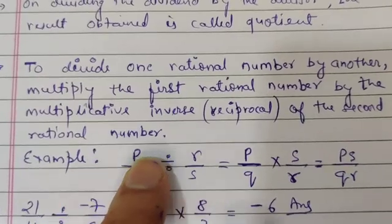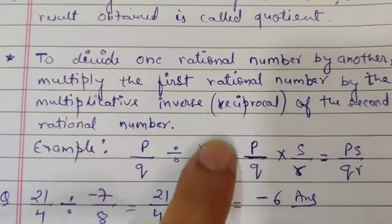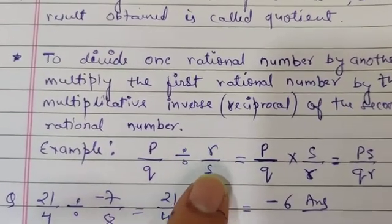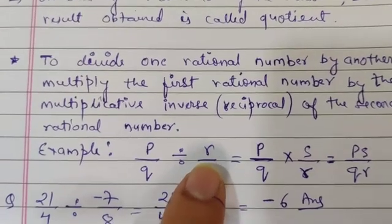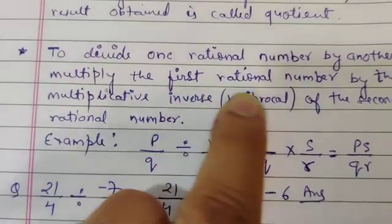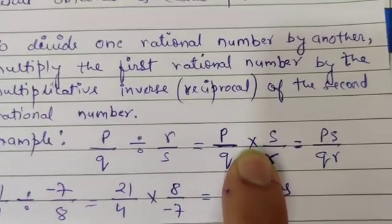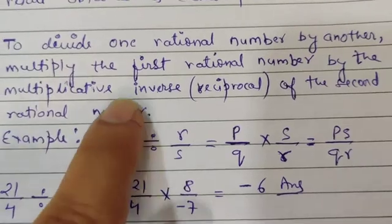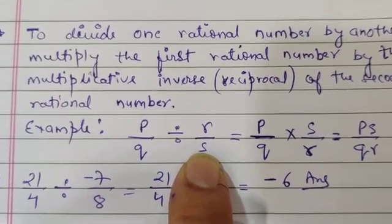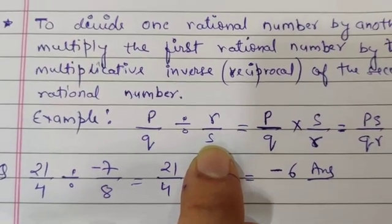Let's see some examples so we can understand easily. So, P by Q is the dividend and R by S is the divisor. As I told you, we will be multiplying the dividend with the reciprocal of the divisor. So you can see here, we are changing the division sign into a multiplication sign. Division से मैंने multiply change कर दिया है। जो dividend है वो as it is आ गया है, P by Q. But जो divisor है, उसका हो गया है reciprocal. Reciprocal means denominator will become numerator and numerator will become denominator.